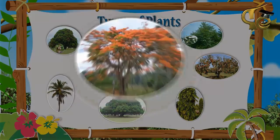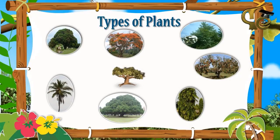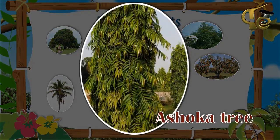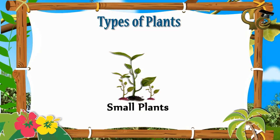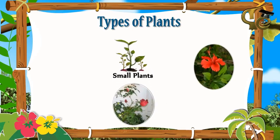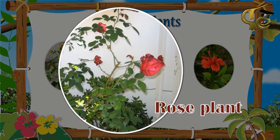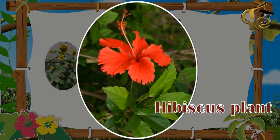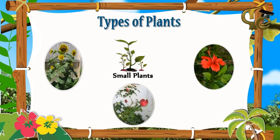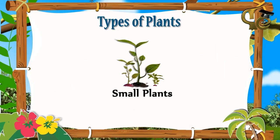Other examples of trees are gulmohar tree and ashoka tree. Some plants are small but strong. Such plants are called shrubs. For example, rose plant, sunflower plant, and hibiscus plant.